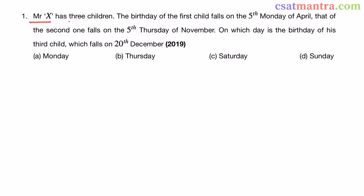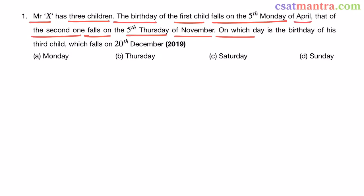Mr. X has three children. The birthday of the first child falls on the 5th Monday of April. That of the second one falls on the 5th Thursday of November. On which day is the birthday of his third child, which falls on 20th December? This question is from the calendar chapter, asked in 2019.